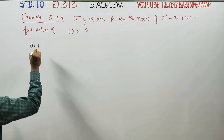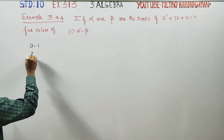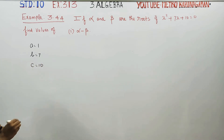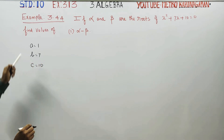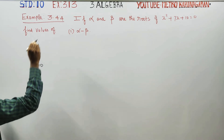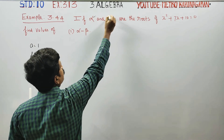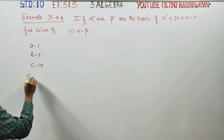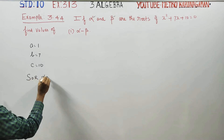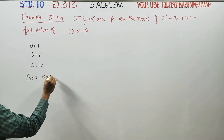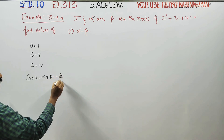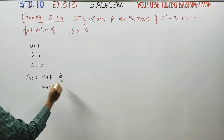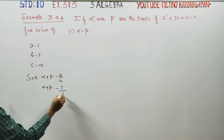The x² coefficient we call a, the x coefficient we call b, and the constant we call c.